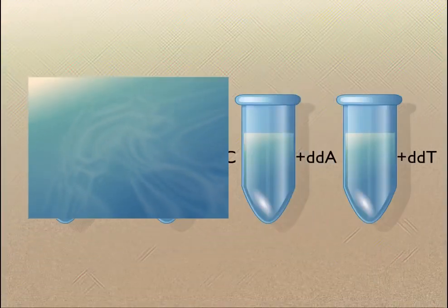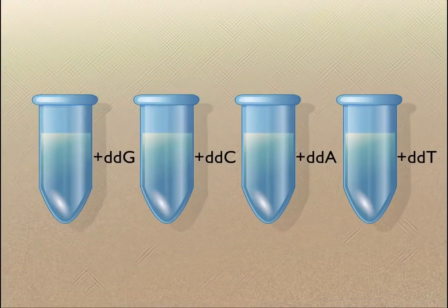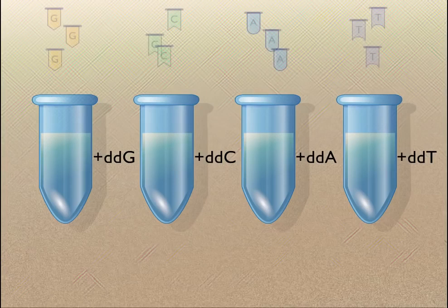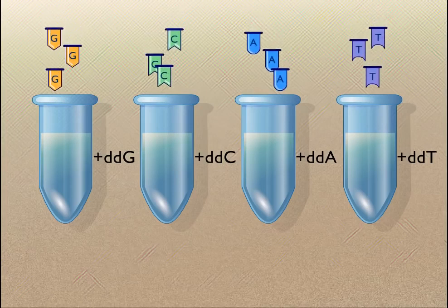Equal amounts of this reaction mixture are placed in each of four tubes, and a different dideoxyribonucleotide is added to each tube.